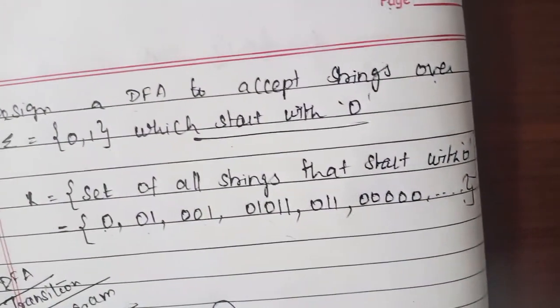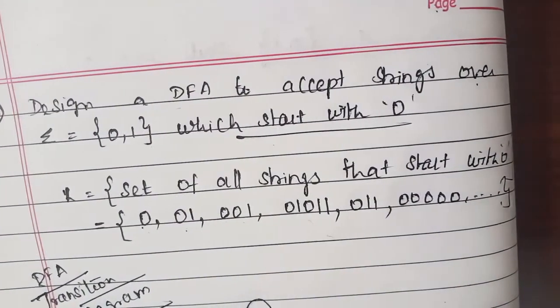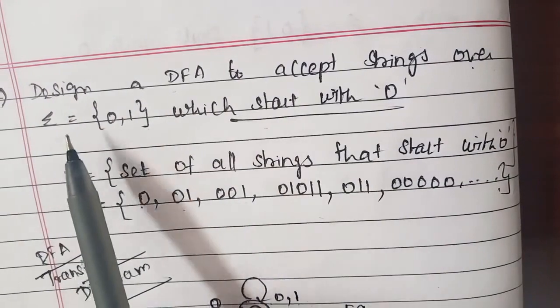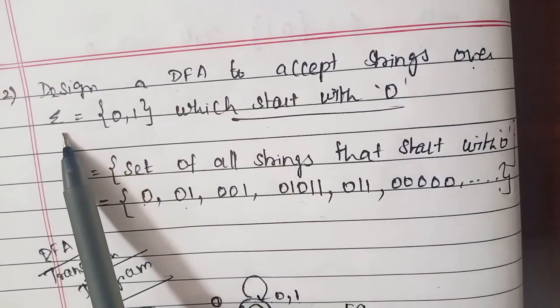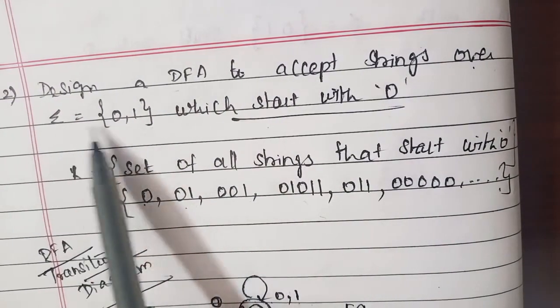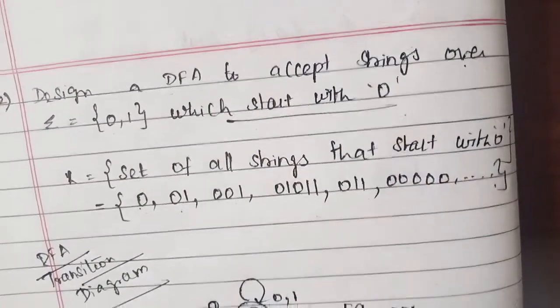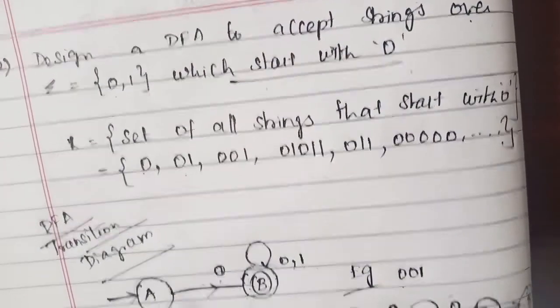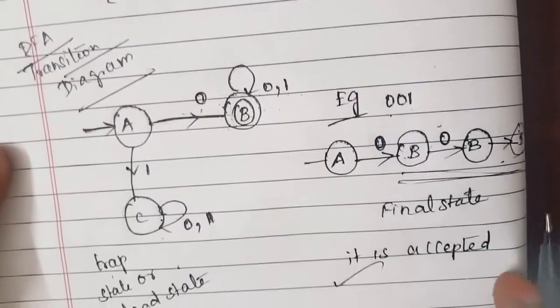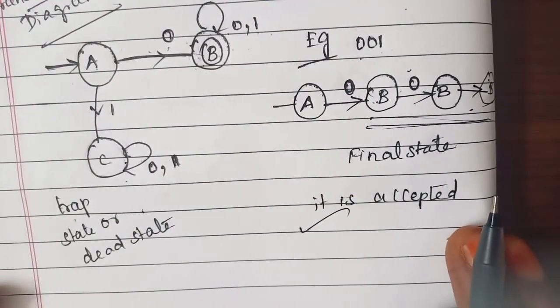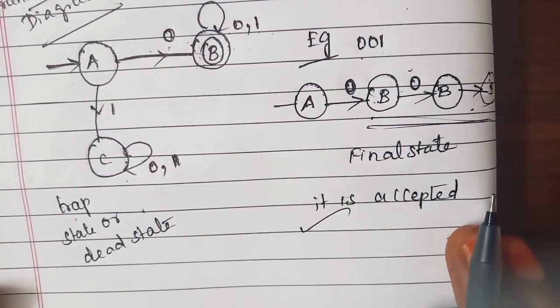This completes the design of a DFA to accept strings over {0,1} which start with 0. Thank you for watching — we will see you in the next session.